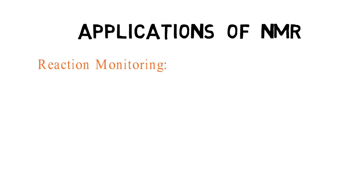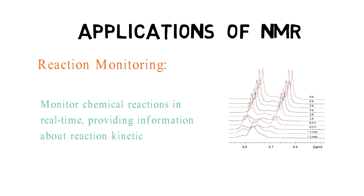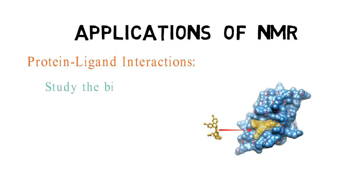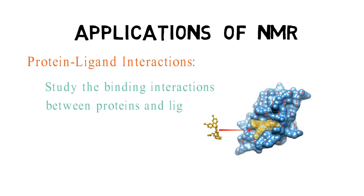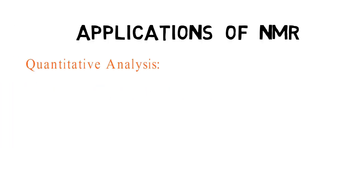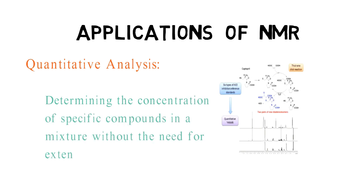NMR can be utilized to monitor chemical reactions in real time, providing information about reaction kinetics and intermediates formed during the process. It is employed to study the binding interactions between proteins and ligands, aiding in drug design and understanding molecular recognition processes. It can also be used for quantitative analysis, determining the concentration of specific compounds in a mixture without the need for extensive sample preparation.